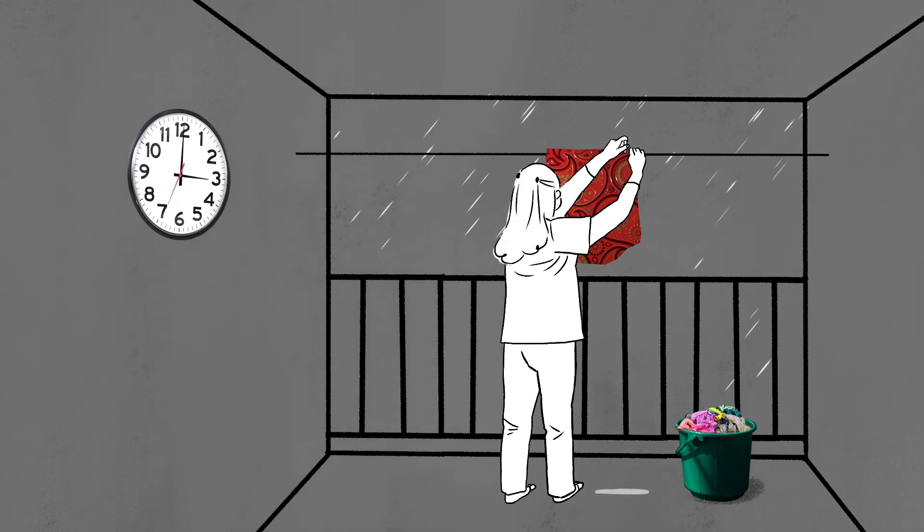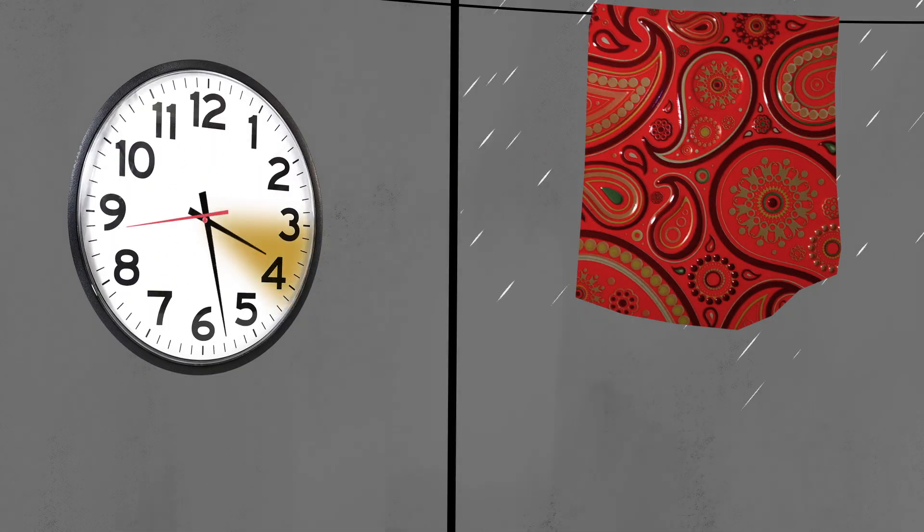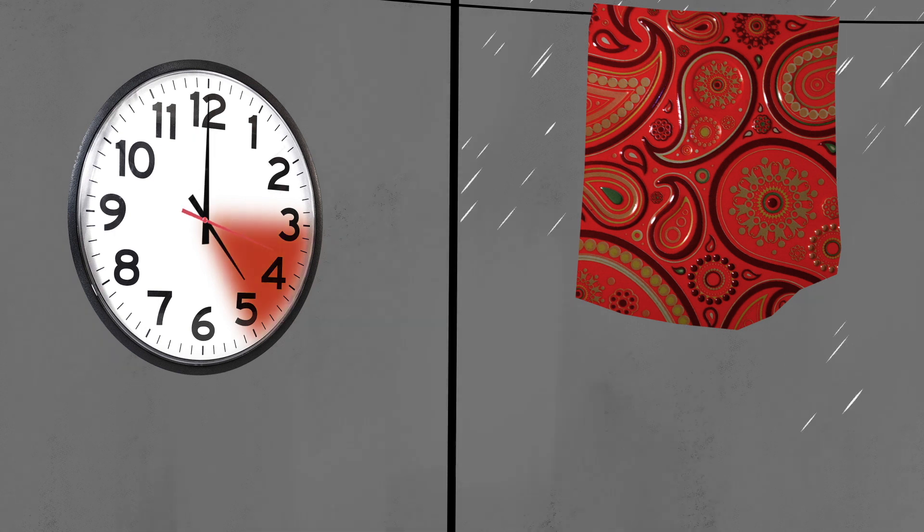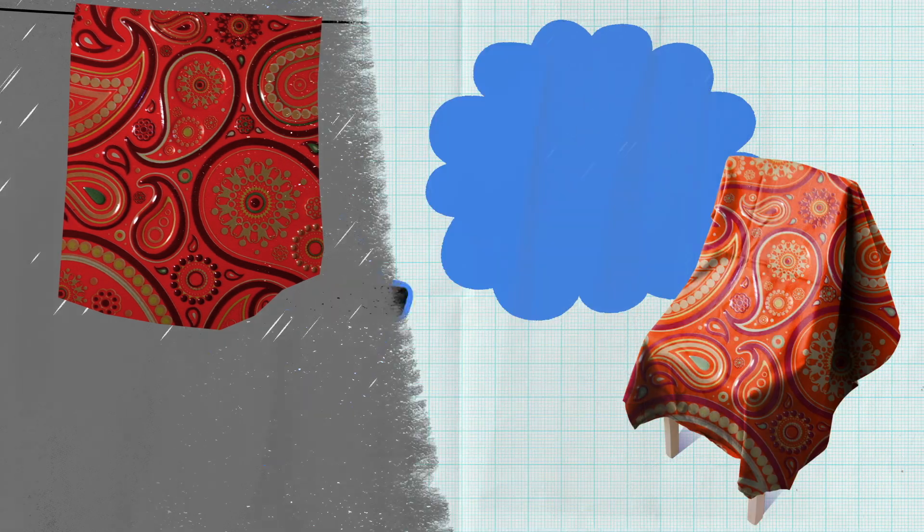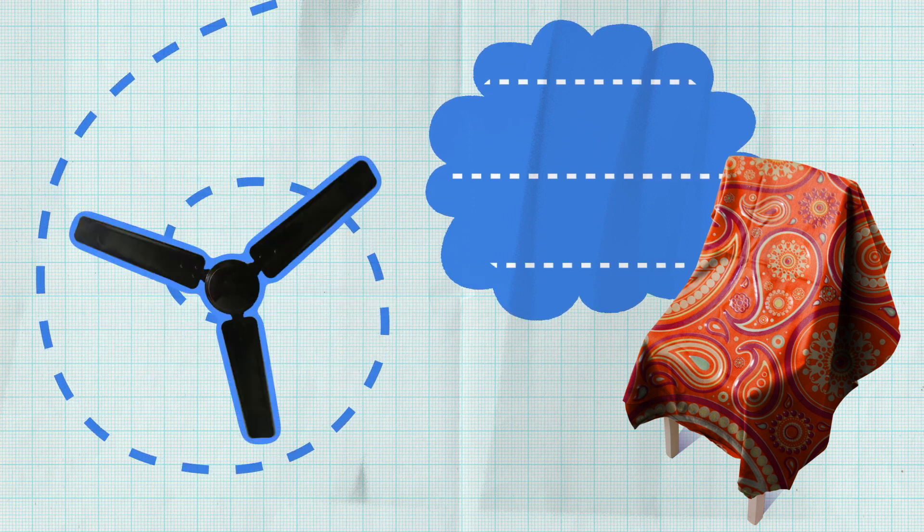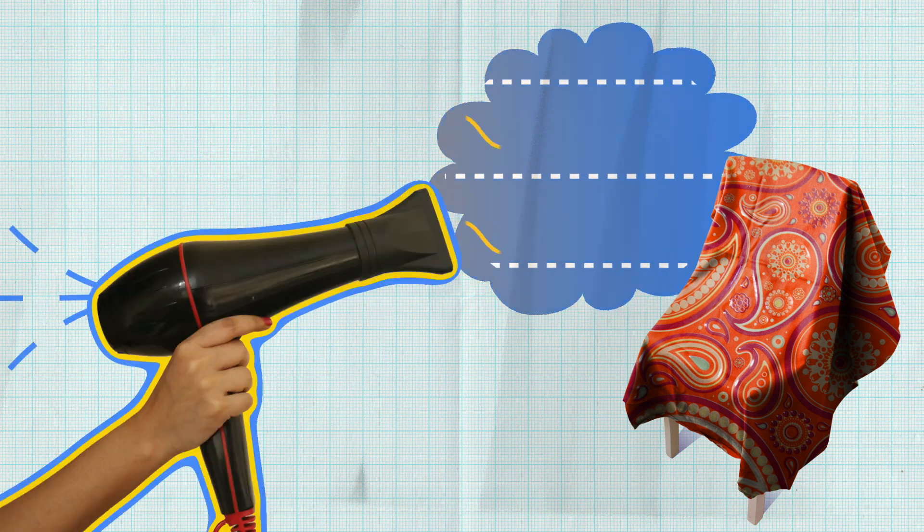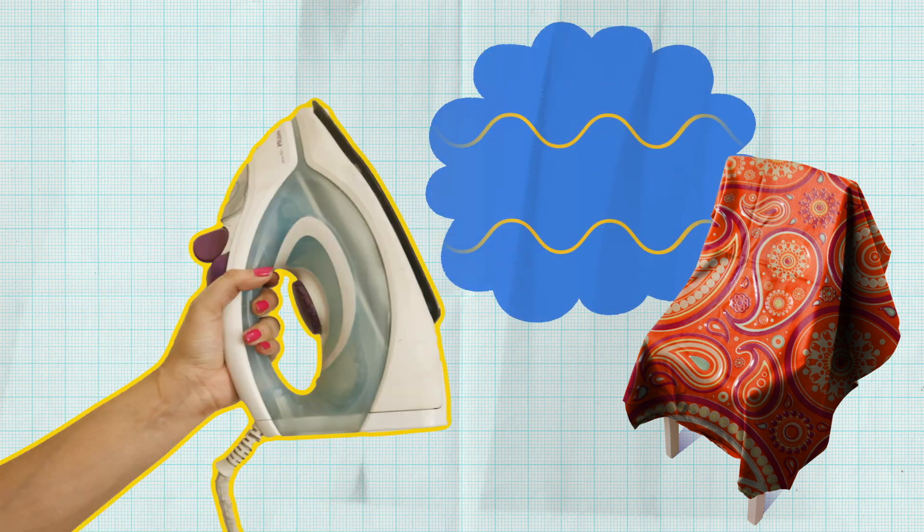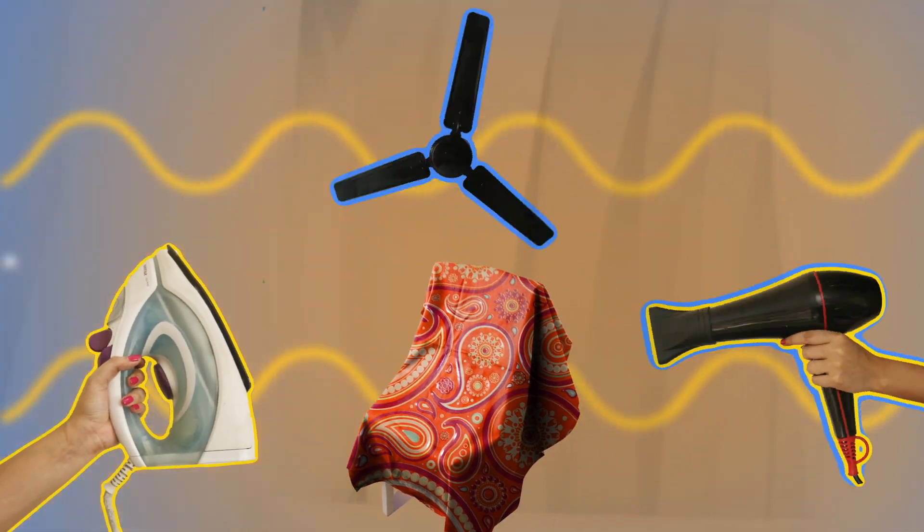You need to dry it in the next two hours. What do you do? Do you keep the dress under the fan at maximum speed? Do you use a hairdryer to dry it, or do you use an iron?